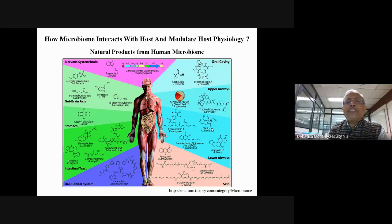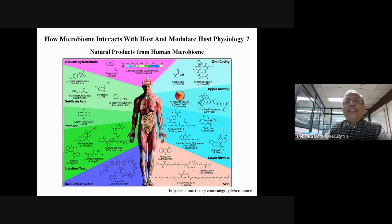What I will concentrate on specifically in this talk is how secondary metabolites — which are either derived from the microbiota, or are host metabolites transformed by the microbiota, or xenobiotics transformed into metabolites — affect different processes. This slide shows many different metabolites which come from microbiota associated with the stomach, intestinal tract, skin, oral cavity, and so on.